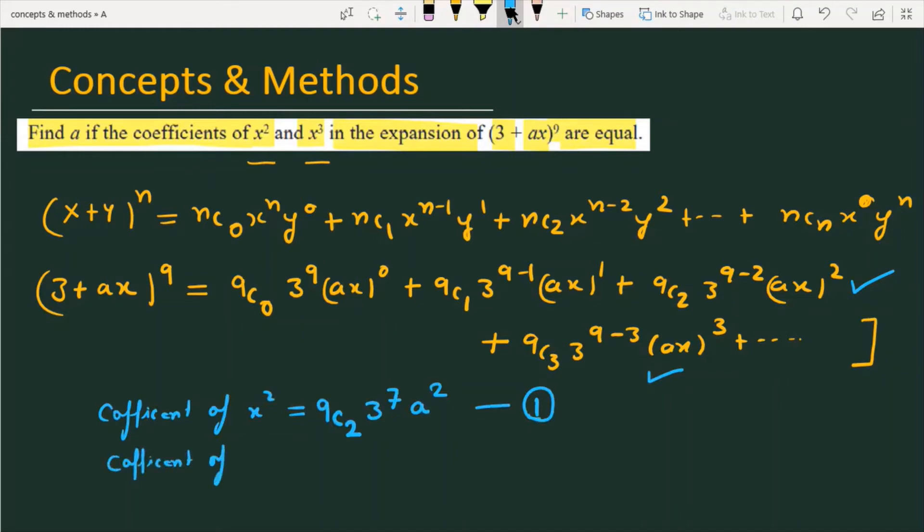Similarly, the coefficient of x³ is ⁹C₃ · 3⁶ · a³. And this is equation number 2.